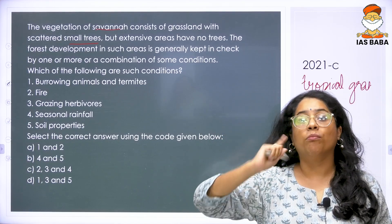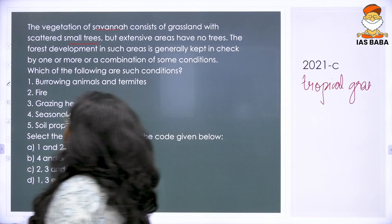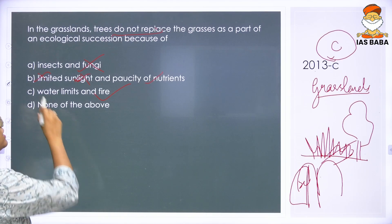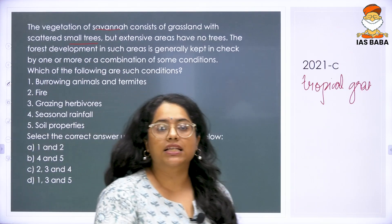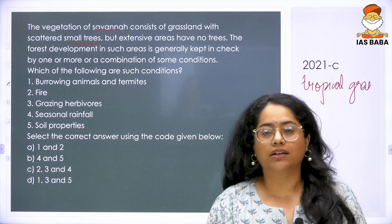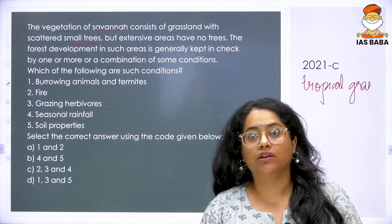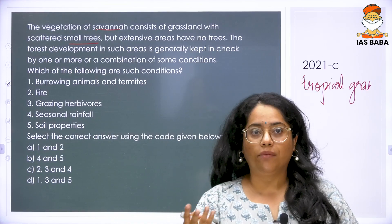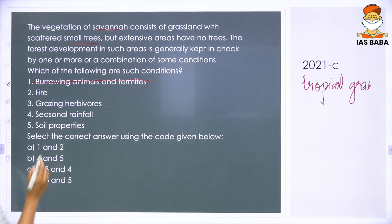One or more or combination. Look at the options — there is burrowing animals and termites. This is very similar to the insects option — insects and fungi. If insects and fungi, or burrowing animals and termites are present, it should affect everyone, not just tree development alone. So you can eliminate option one.